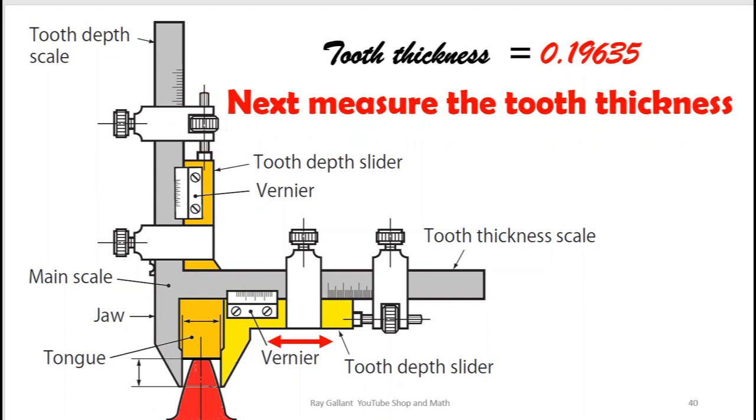Next we're going to measure our tooth thickness. Now we can't set this because if you set it and it's too small it'll go down. And if we set it and it's too large it'll just plop right in. So we need to actually measure what the tooth thickness is.